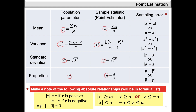For the mean, the sampling error is the absolute difference between X bar and mu, or mu minus X bar. For the variance, it's the absolute difference between S squared and sigma squared, or sigma squared minus S squared. For the standard deviation, it's the absolute difference between S and sigma, or sigma minus S. And for the proportion, it's the absolute difference between the population proportion P and the sample proportion P bar, or P bar minus P.